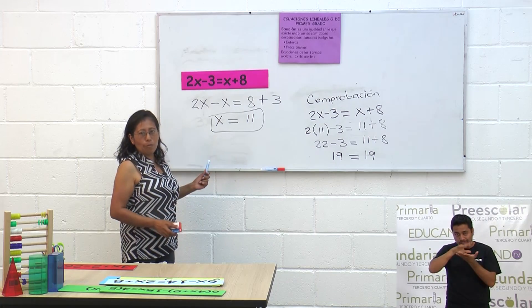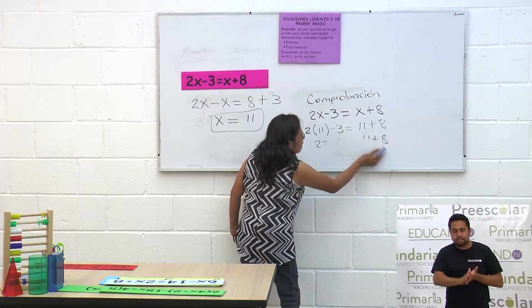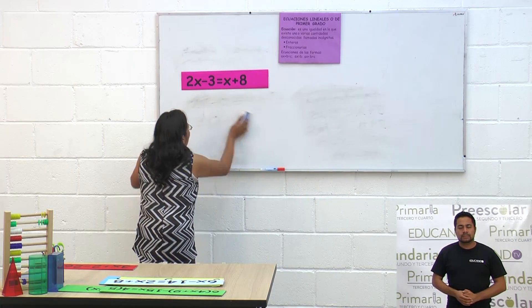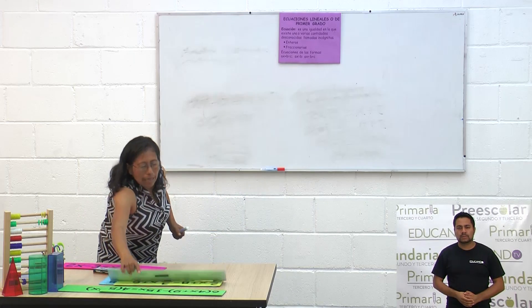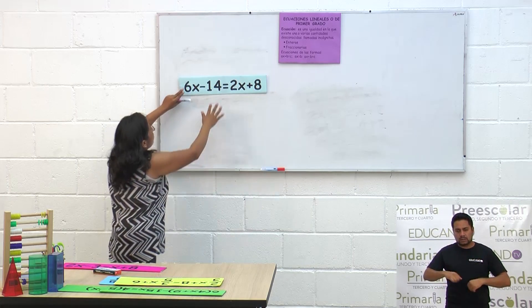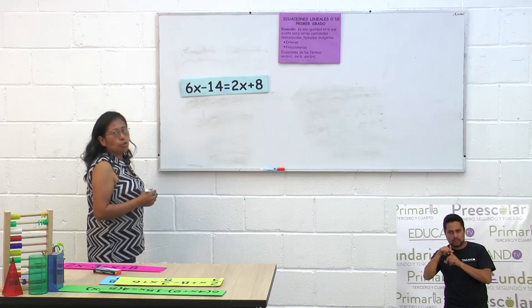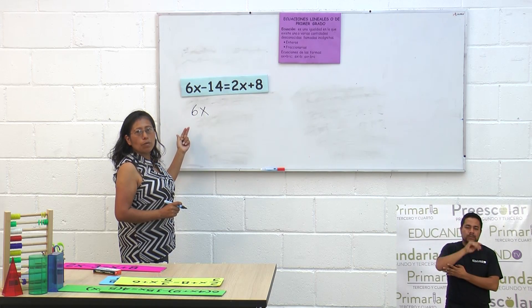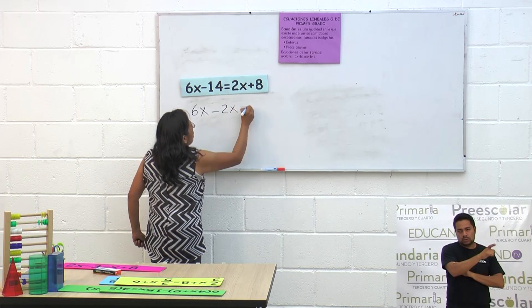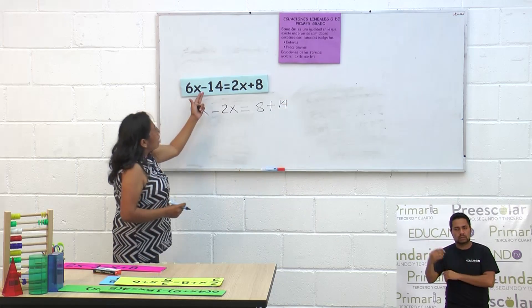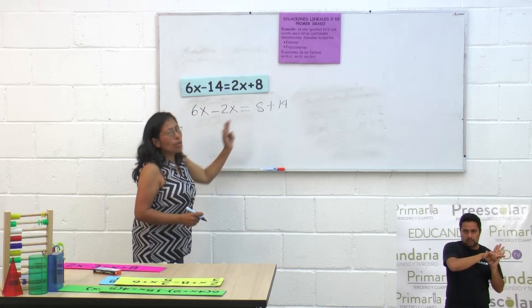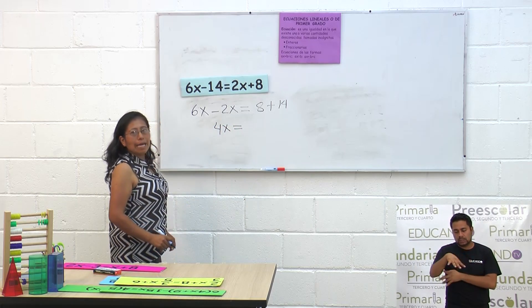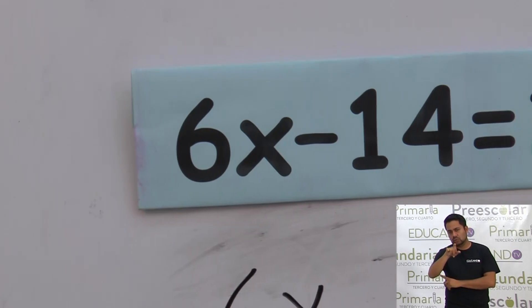Voy a borrar porque vamos a hacer otra ecuación. Vamos a resolver: 6x menos 14 igual a 2x más 8. Tenemos 6x; el 2x está en el segundo miembro, lo vamos a pasar al primer miembro con su inversa. Menos 2x igual a 8 más 14. El 14 en el primer miembro está como negativo y en el segundo miembro pasa como positivo. Ya tenemos 6x menos 2x, que es 4x, igual a 14 más 8, que es 22.